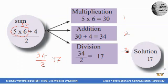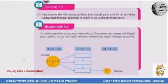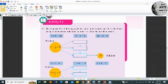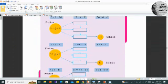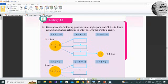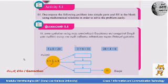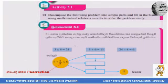The solution is 11. Now you can go to your workbook — let's discuss Activity 5.1. The activity asks you to decompose the following problem into several parts and fill in the blanks using mathematical relations in order to solve the problem easily. There is the same problem solved in different ways, but the solution is the same. Note: in that question you have to correct it as 5 plus 1 upon 2 multiplied by 8.